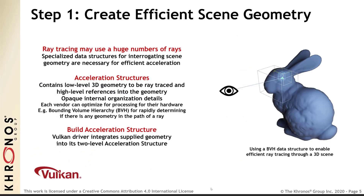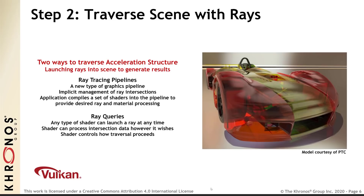If you want better light and shadow in your scene, ray tracing seems to be the future of this technology. The first step is to create efficient scene geometry, since ray tracing may use a huge number of rays and specialized data structures for interrogating scene geometry are necessary for efficient acceleration. Next, you traverse the scene with rays. There are two ways to traverse: ray tracing pipelines — a new type of graphics pipeline with implicit management of ray intersections — and ray queries. The application compiles a set of shaders into the pipeline to provide desired ray and material processing. Any type of shader can launch a ray at any time.